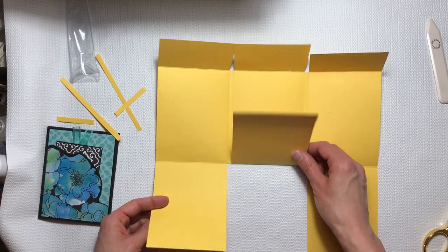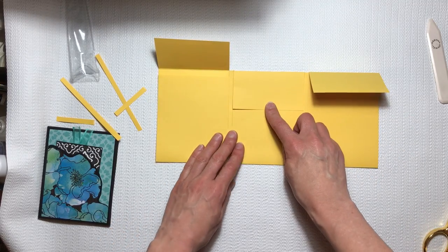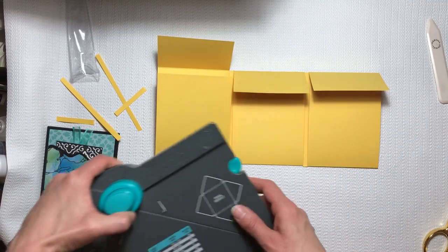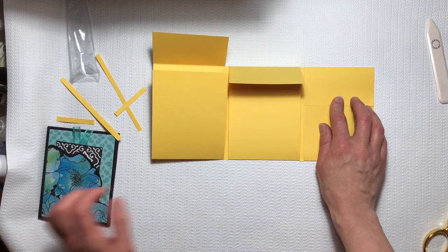And that's about the difference there. So I just wanted to show you how easy it is to cut it. You can use your envelope punch board, the back of it to punch out the round corners, or you can leave them square if you like.